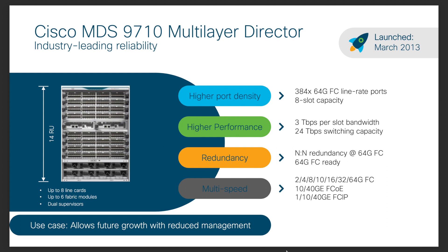Moving on to the second model, MDS 9710, launched in March 2013. It can support up to 48 terabits per second of chassis bandwidth using 384 ports supporting 2GB up to 64GB fiber channel line rate speeds. Being one of the best selling directors in the industry, this is the chassis for those looking for redundancy, flexibility, and future growth. This chassis has eight line card slots, eight PSU slots, and can accommodate up to six fabric modules. MDS 9710 can provide all the benefits of MDS 9706 along with higher port density and n-plus-2 to n-plus-2 grid level power supply redundancy.